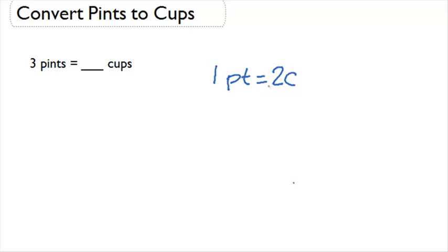If one pint is equal to two cups, and we want to know how many three pints are equal to, then we're simply going to multiply that three by two, because there's two cups in every one of those three pints, and we're going to end up with the answer of six cups.